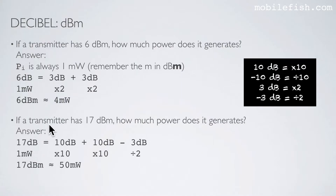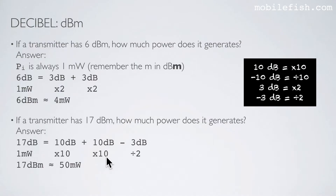Another example: if a transmitter has 17 dBm, how much power does it generate? We start with 17 dB, written as 10 dB plus 10 dB minus 3 dB, which equals 17 dB. Starting with 1 milliwatt: multiply by 10 gives 10 milliwatt, multiply by 10 gives 100 milliwatt, divide by 2 gives 50 milliwatt. So 17 dBm is approximately 50 milliwatt.